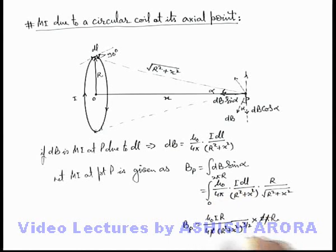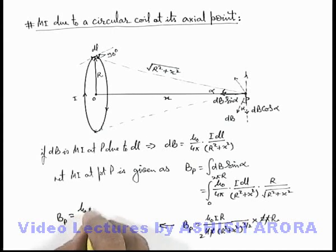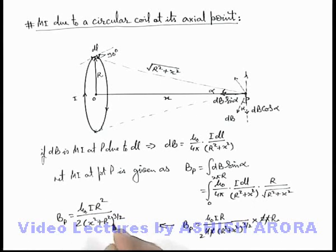Here this pi gets cancelled out, 2 gets cancelled out, and the remaining result we can write b at point p as mu not i r square by twice of x square plus r square to power 3 by 2.